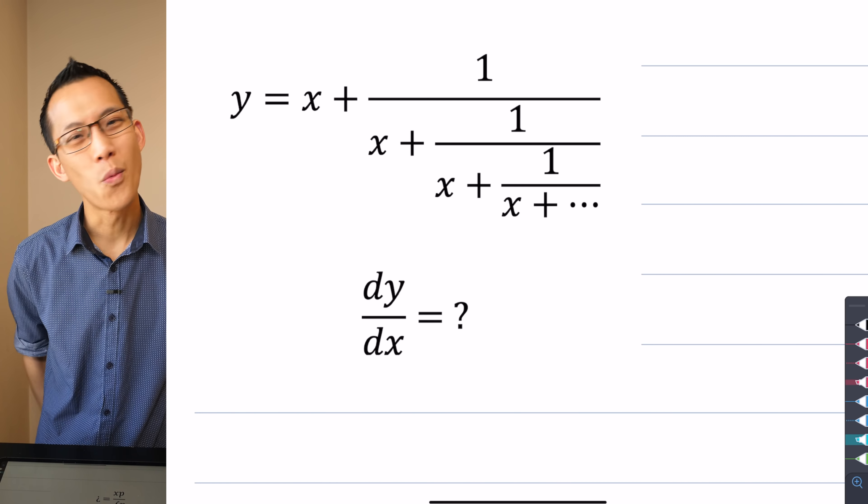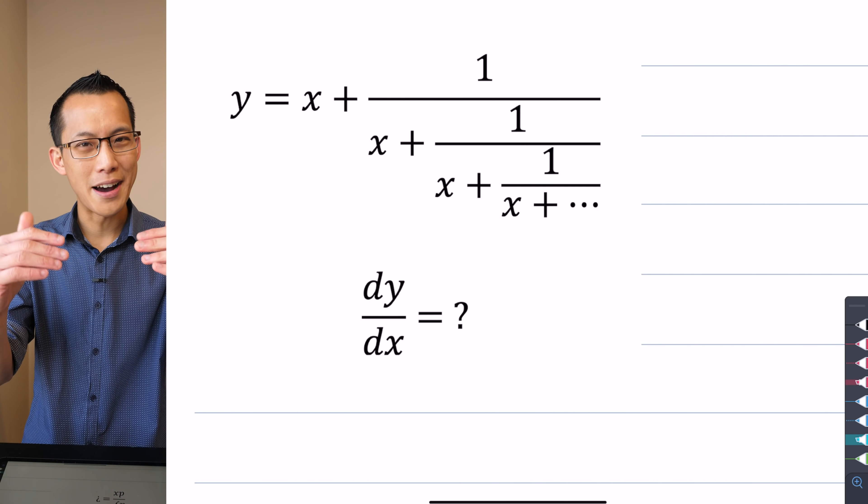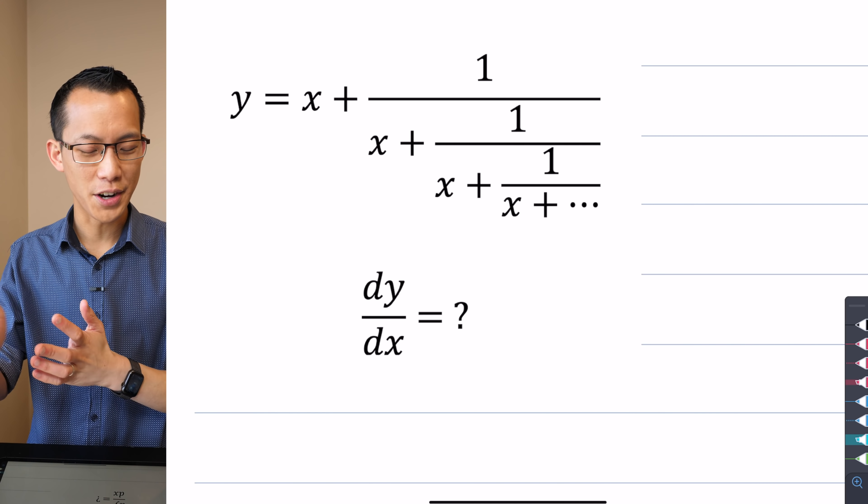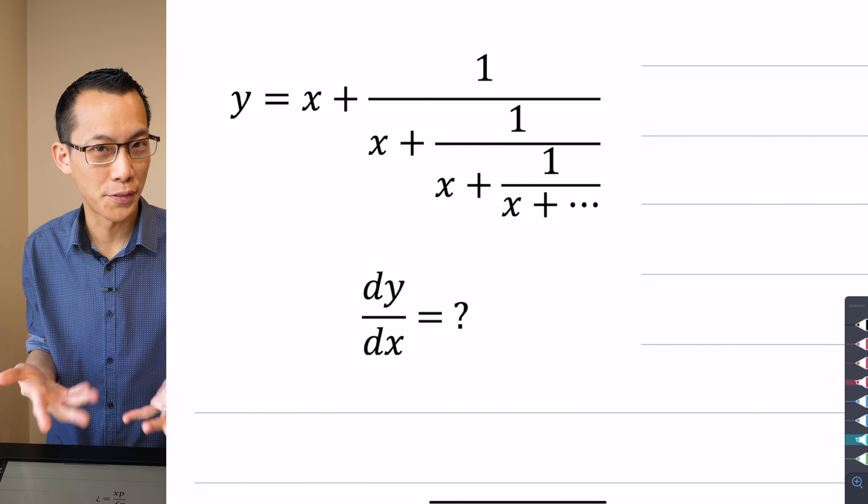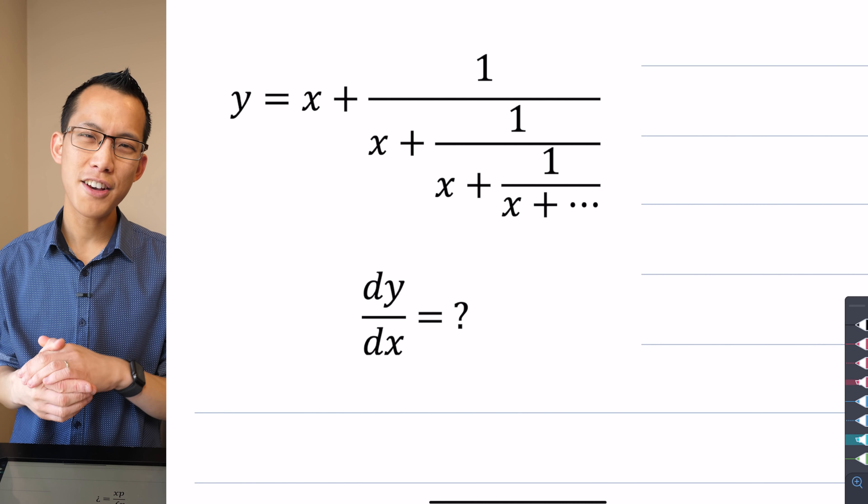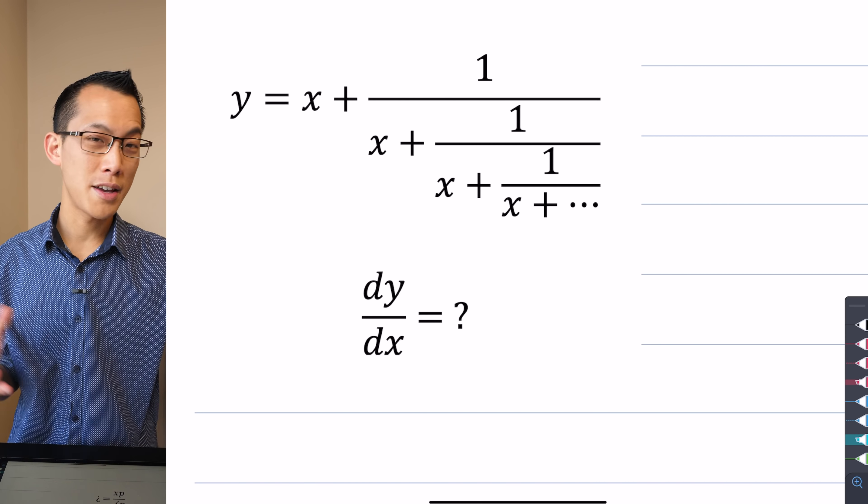So the first thing I want to point out is why is this continued fraction so difficult to deal with? And the answer is it's an infinite object, right? It just goes on forever and ever, and because it goes on forever, there's no point at which you can say, oh, let me just put a neat bow around it and then it's well defined and then off I go. But the thing is, because it is an object that goes on forever, we can actually use the object itself to help us define it.